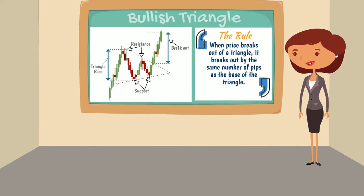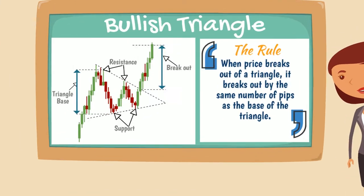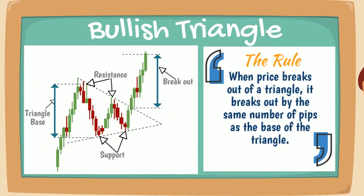The rule for a bullish symmetrical triangle is, when price breaks out of the triangle, it breaks out by the same number of pips as the base of the triangle.